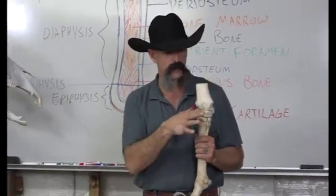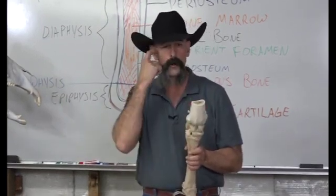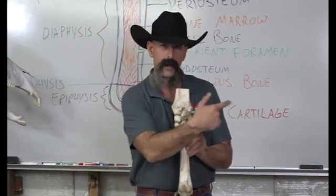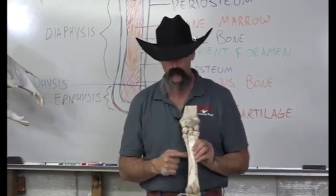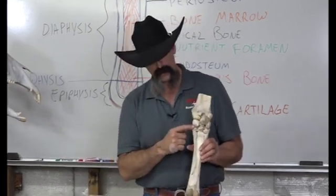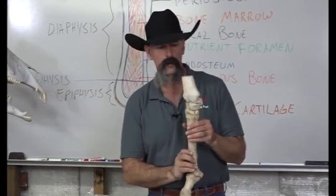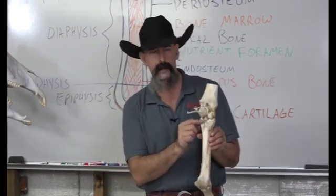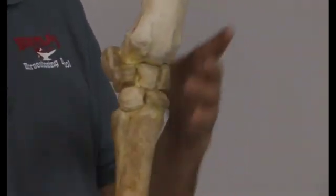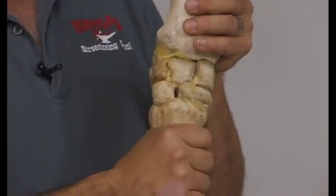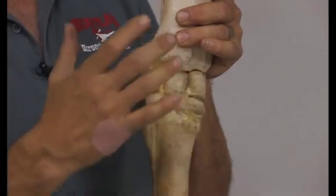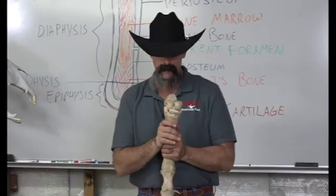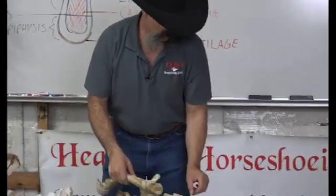Where the radius hits the carpus is called the radiocarpal joint. Between the two rows of carpal bones is the middle carpal joint, sometimes called the intercarpal joint. The bottom row is numbered — medial numbers are smaller, lateral numbers are higher. So the medial bone is the second carpal, then third carpal, and fourth carpal on the lateral side. Occasionally the first carpal is present on the medial side, very small. The carpal metacarpal joint is between the distal row of carpals and the top of the metacarpus, which has three bones: the cannon bone and two splint bones.